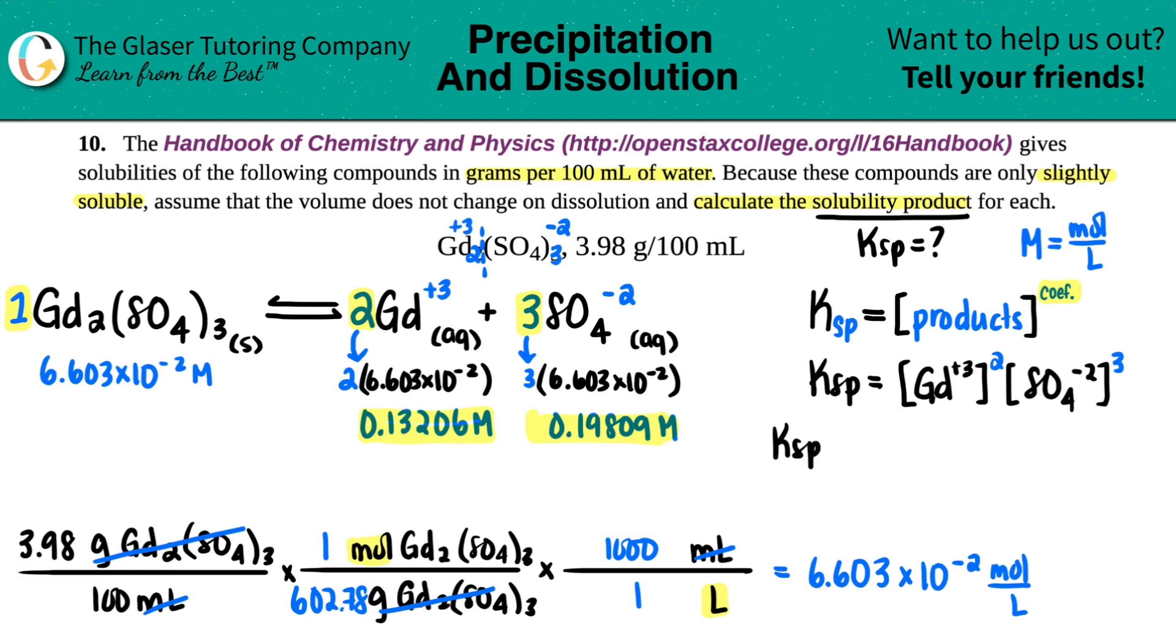Let's figure out what those numbers are. 6.603 times 10 to the negative second times two. I get 0.13206 molarity. 3 times 6.603 times 10 to the negative second is 0.19809 molarity. And these are now your two molarity values. So Ksp equals the Gd squared, because that's in the formula, and the SO₄ cubed. So I have 0.13206, that's the Gd one, and then 0.19809, that's the SO₄ one, and then just multiply it out. Do the exponents and then just multiply them. And now I should have three sig figs. So 1.36 times 10 to the negative fourth. And Ksps are unitless. They have no units. So it's just a number.